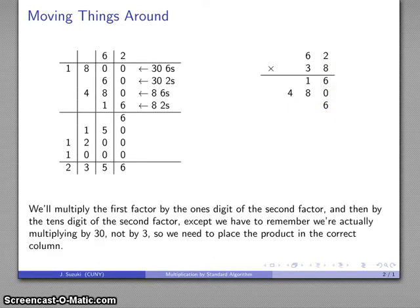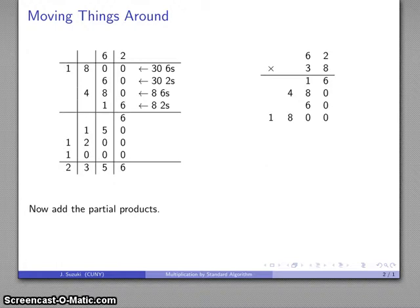That's really 30 times 2. So I really don't want to write this 6 here. It should actually be a 60. So I'll write that in the correct place. And 3 times 6 is 18, except that it's really 30 times 60 is going to be 1,800. And then I add the partial products.